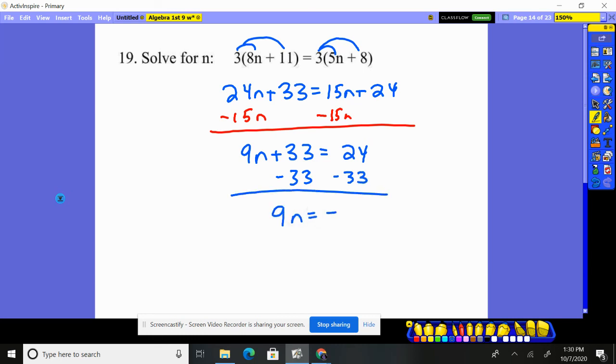9n equals negative 9, divide by 9, negative divided by positive is a negative answer.